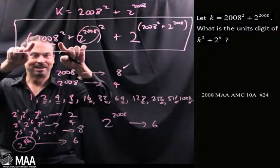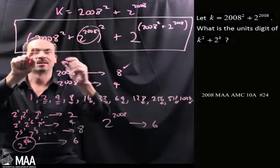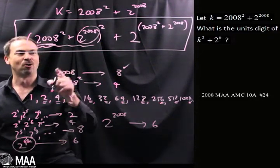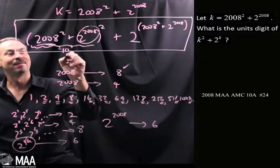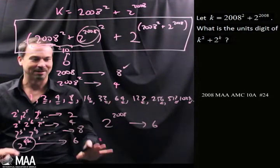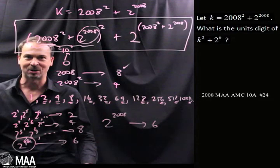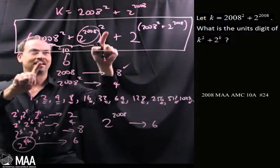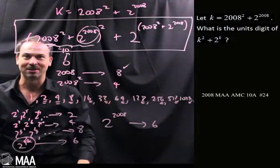So: 2008 squared ends in a 4, and 2 to the 2008 ends in a 6. So the piece in parentheses — k — ends with 4 plus 6, which is basically ending with a 10. So k ends in a 0. I feel this problem has hope now. I've got the last digit of k, and if I square it I can do it, and the 2 to the k part is just another power of 2 — so this reasoning will work out there as well.